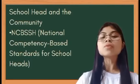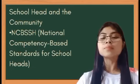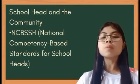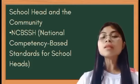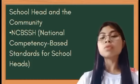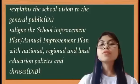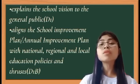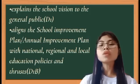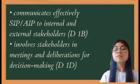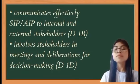School head and the community. The school and the community are partners in the education of the child. In the NCBSSTH, several strands address school and community partnership. These include: explaining the school vision to the general public (Domain 1-B); aligning the school improvement plan or annual improvement plan with national and regional education processes (Domain 1-B); communicating effectively with IP or AIP to internal and external stakeholders (Domain 1-B); involving stakeholders in meetings and decision-making (Domain 1-B); and providing feedback and updates to stakeholders on the status of programs and projects.